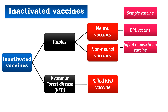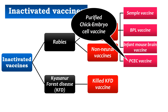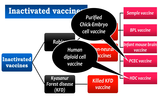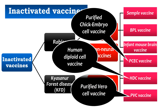Non-neural vaccines, which are cell-cultured, are the most recommended vaccines for the prevention of rabies nowadays. They are highly immunogenic and devoid of neurological complications. The first is PCEC vaccine (Purified Chick Embryo Cell vaccine), developed from chick fibroblast cell lines. The second is HDC vaccine (Human Diploid Cell vaccine), derived from human embryonic lung fibroblast cell lines. The third is PVV vaccine (Purified Vero Cell vaccine), developed from Vero cell lines.